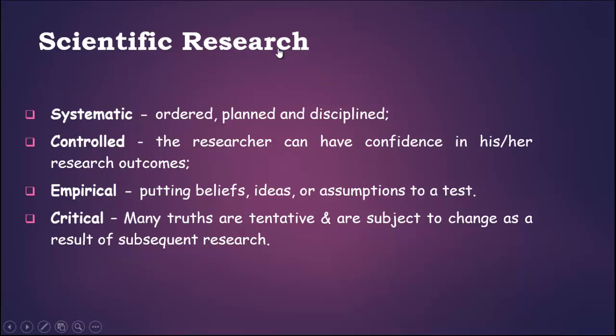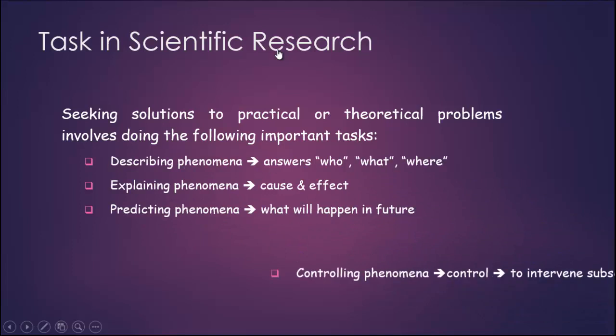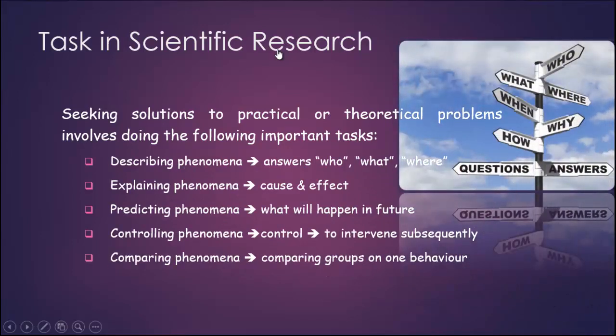When you disseminate your outcomes, be ready for criticism. The tasks involved while conducting scientific research — if you are seeking solutions to practical or theoretical problems — involve the following: describing phenomena means answering who, what, and where; explaining phenomena means identifying cause and effect; predicting phenomena means explaining what will happen in the future; controlling phenomena means knowing how to control outcomes; and comparing phenomena means verifying and validating the outcomes.